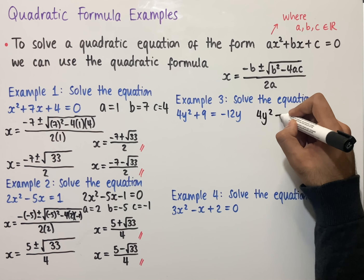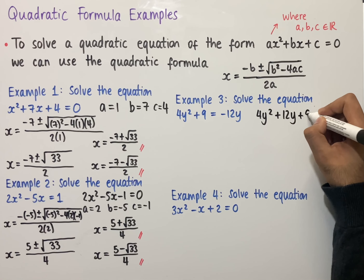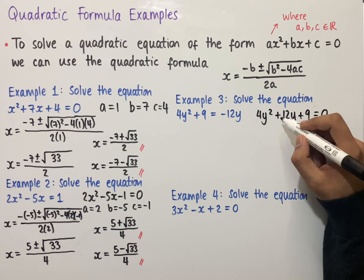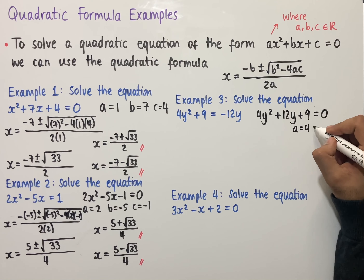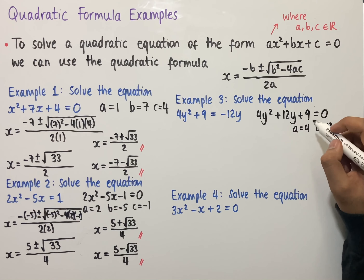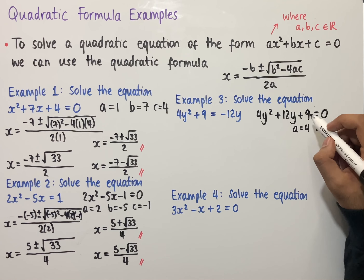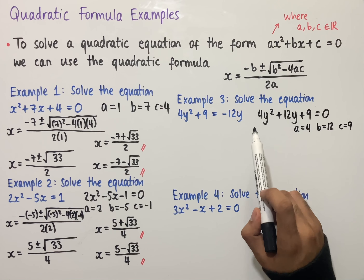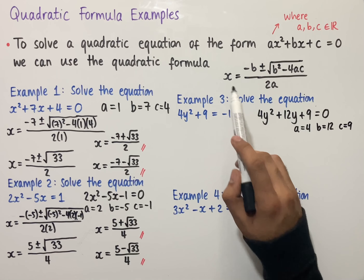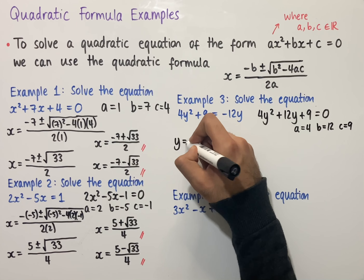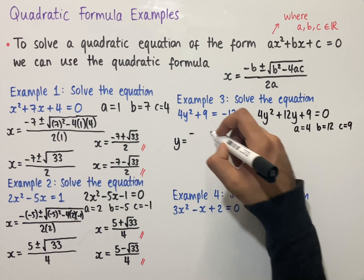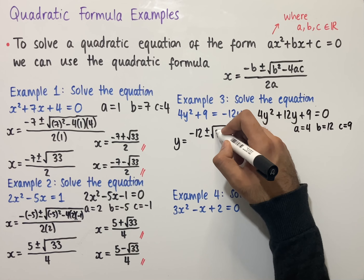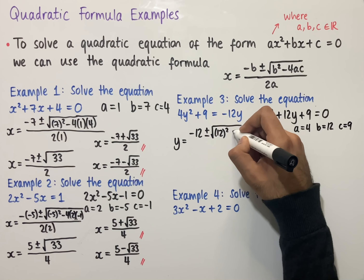The third example says to solve the equation 4y² + 9 = -12y. Again we need to rearrange, and we should also notice that the variable is in terms of y and not x. So we add 12y to both sides to give us 4y² + 12y + 9 = 0. We can then label our coefficients: a = 4 (coefficient of y²), b = 12 (coefficient of y), and c = 9 (the number on its own).